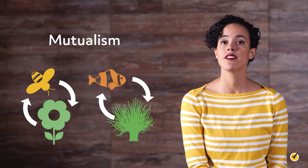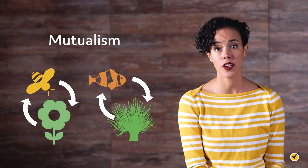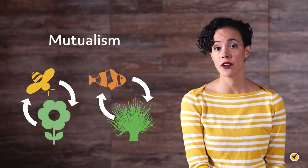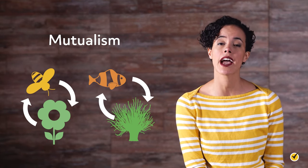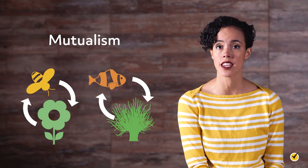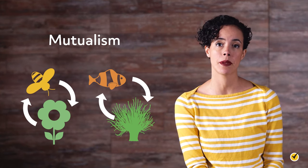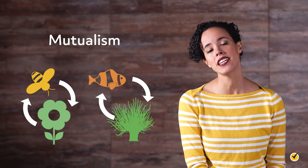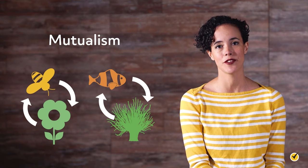Clownfish and sea anemones have the same sort of mutualistic relationship. To other fish, brushing up against a sea anemone is deadly, but clownfish are unaffected by the anemone's sting because they have adapted to form a protective mucus on their skin. So the clownfish is able to live in the sea anemone and in the process keeps it clean, while the sea anemone gives the clownfish protection and a place to live.